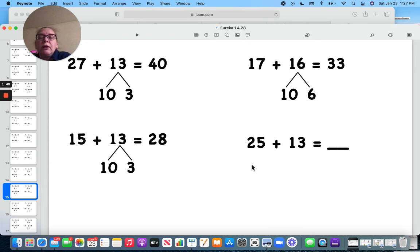And over here, I have 25 and 13. Let's break up the 13. 25 and 3 is 35. 35, 36, 37, 38.